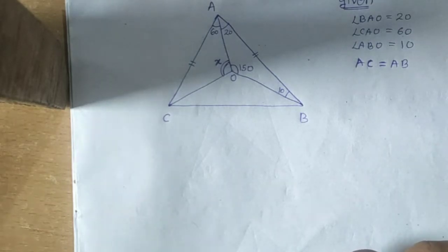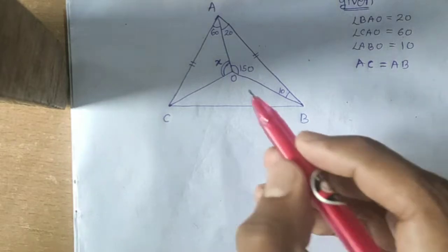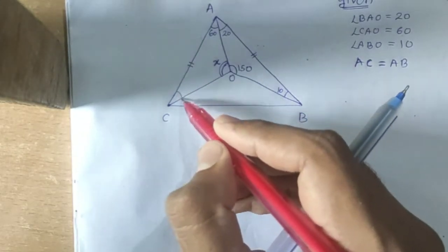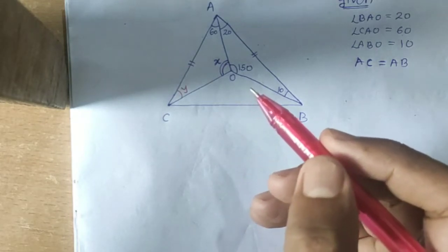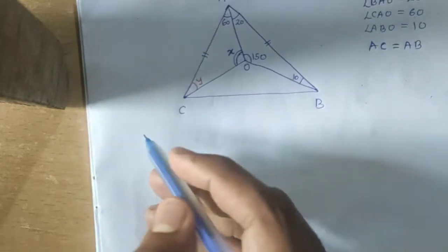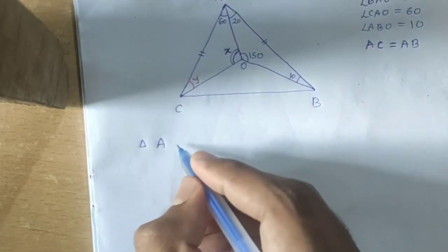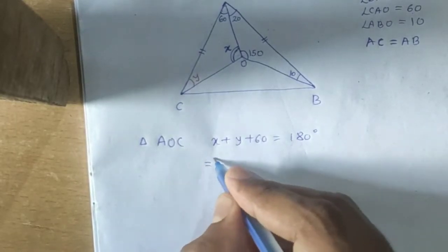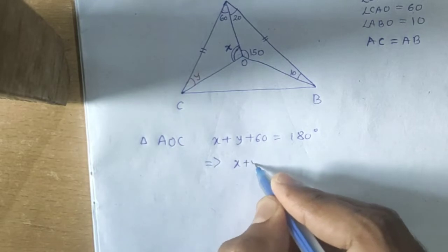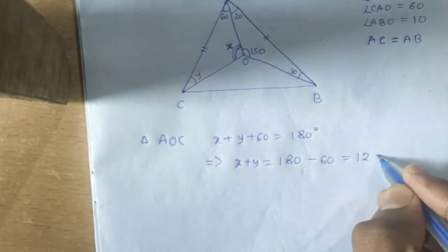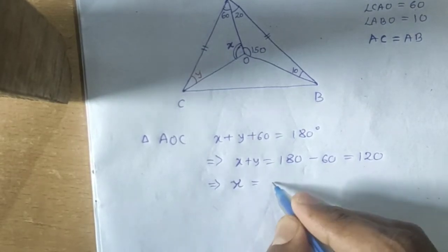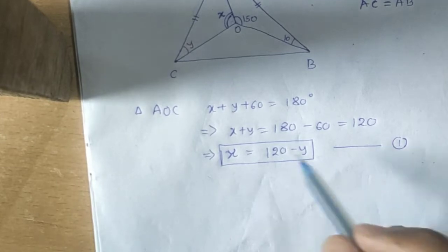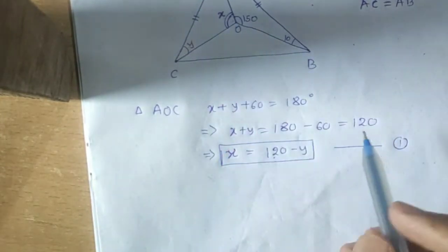To solve this type of question, let this unknown angle be y. In triangle AOC, x plus y plus 60 equals 180 degrees. This implies x plus y equals 120, which means x equals 120 minus y. Remember this — angle x equals 120 minus y.